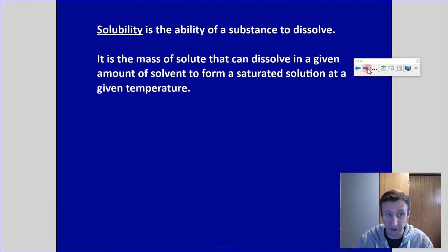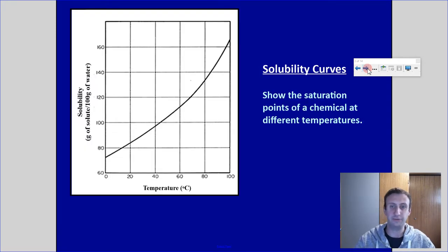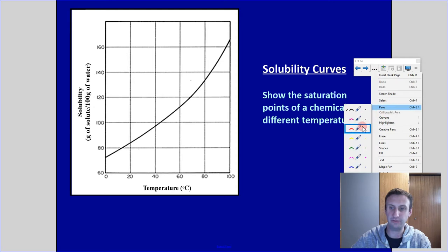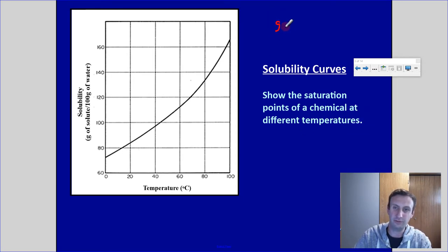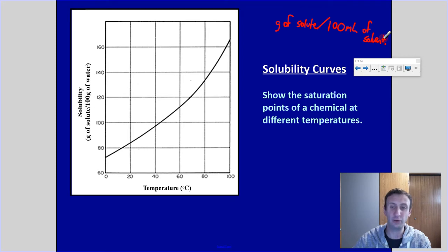Solubility is the ability of a substance to dissolve. It is the mass of solute that can dissolve in a given amount of solvent to form a saturated solution at a given temperature. The normal unit for solubility we use in chemistry is grams of solute per 100 milliliters of solvent. The solubility curve shows the saturation points of a chemical at different temperatures.